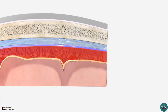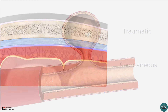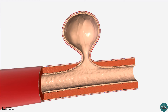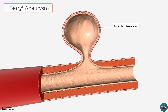Subarachnoid haemorrhage can be traumatic or spontaneous. Most cases are due to trauma, but of the spontaneous or non-traumatic causes, by far the most common cause is rupture of an intracranial berry aneurysm. These make up approximately 85% of the cases of spontaneous subarachnoid haemorrhage.